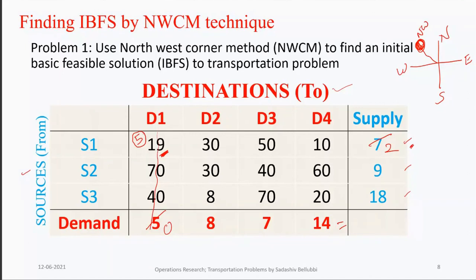In the remaining matrix, the new northwest corner has a supply of 2 and demand of 8. Like having 240 rupees but someone wants 300 — you can only give what you have. So we allocate 2 here; S1 becomes 0 and we cancel that row, leaving a remaining demand of 6.